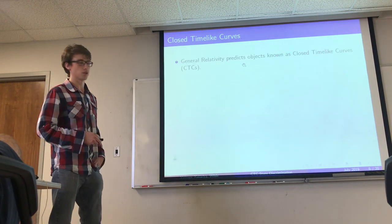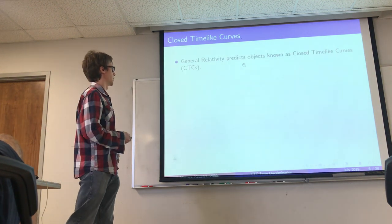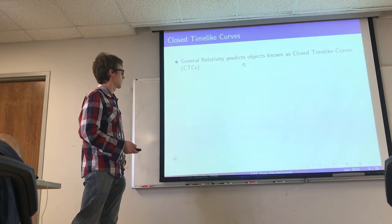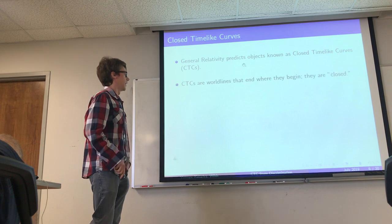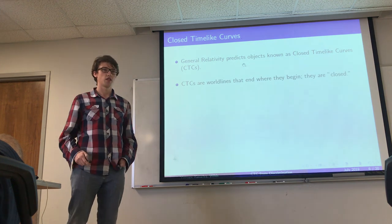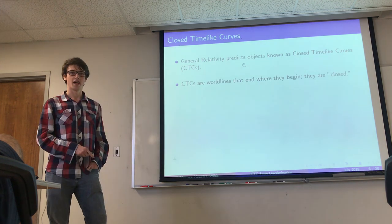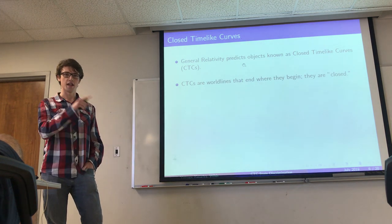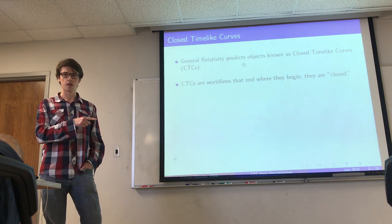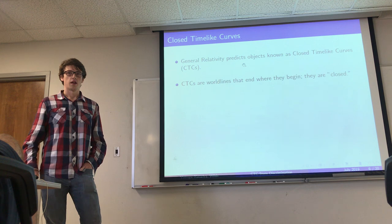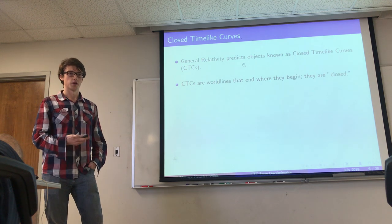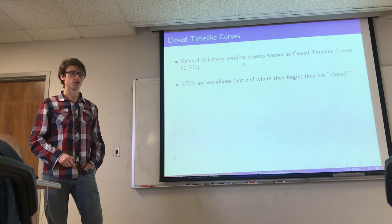Closed timelike curves are objects studied in general relativity. You can think of them as world lines that end where they begin — in other words, they are closed curves in space-time.